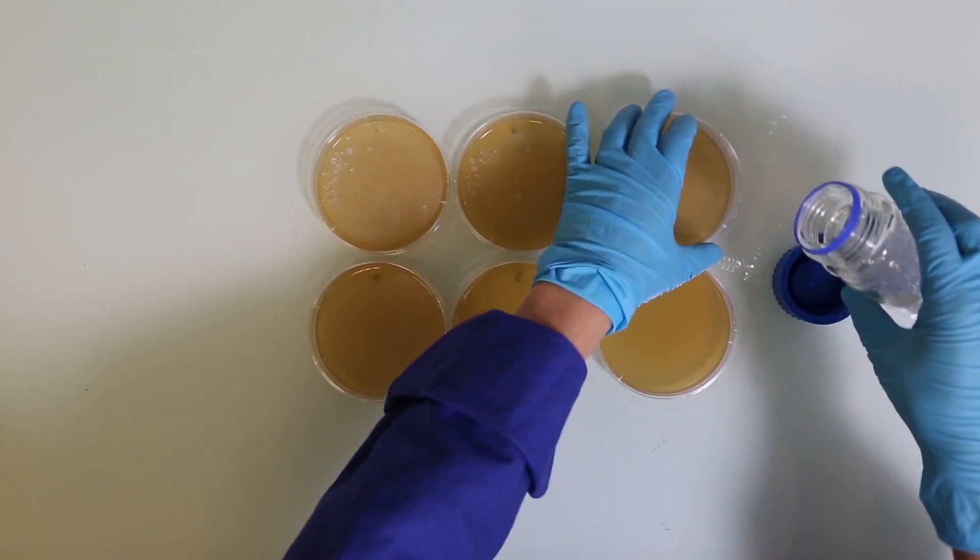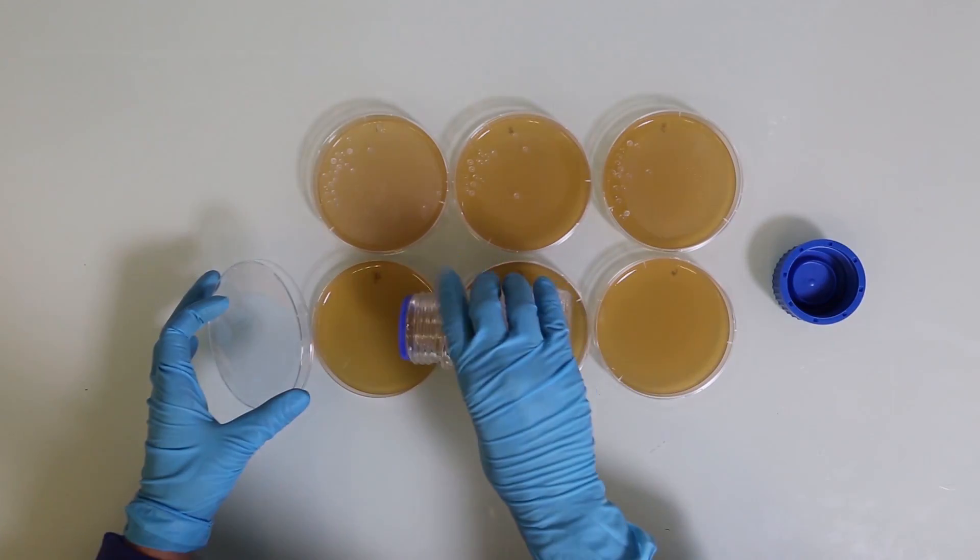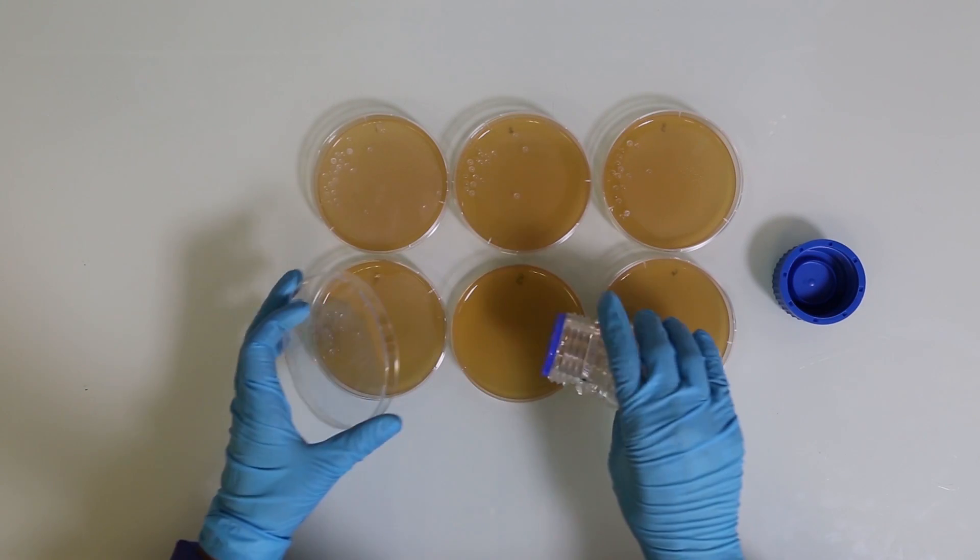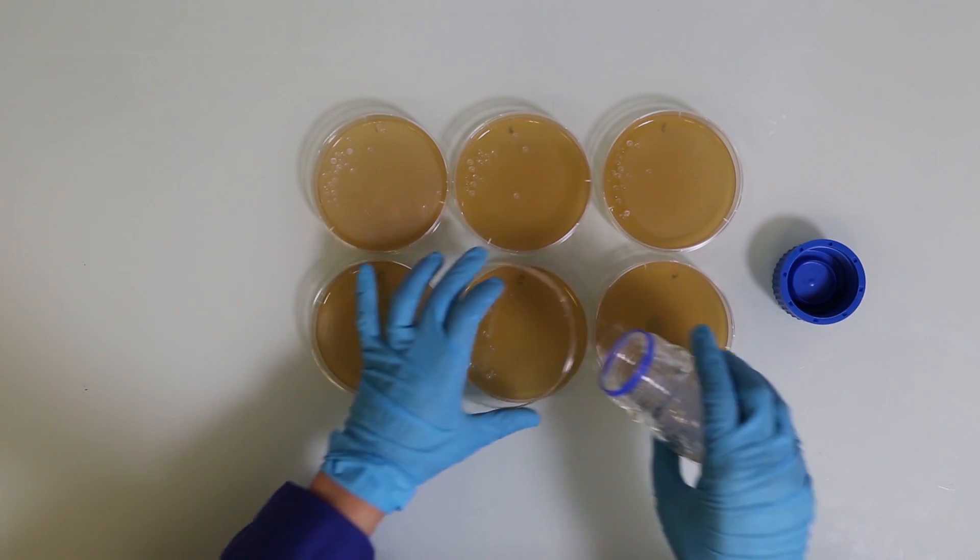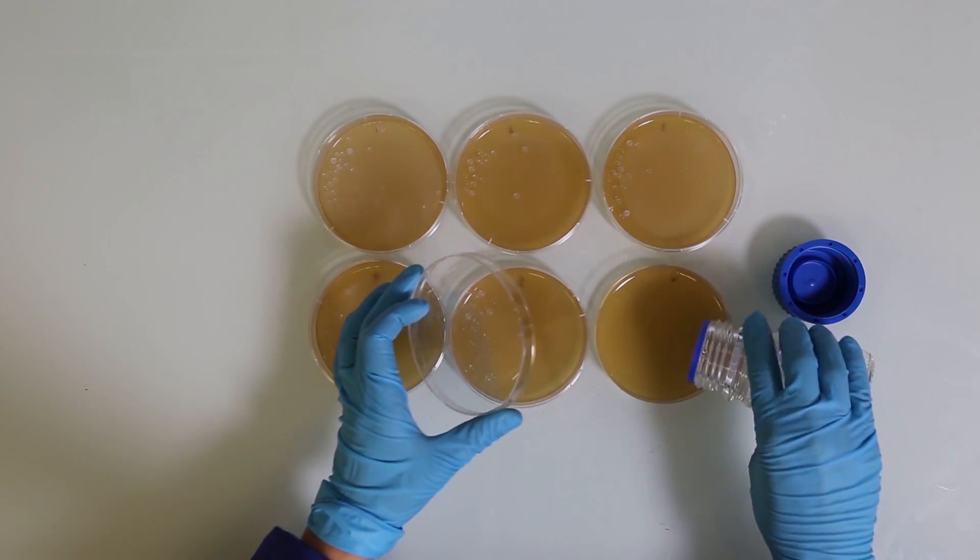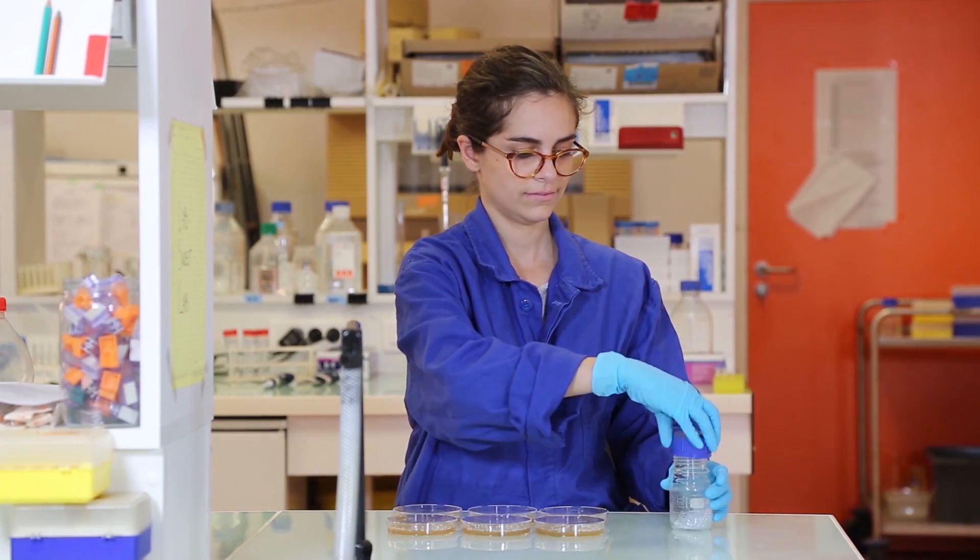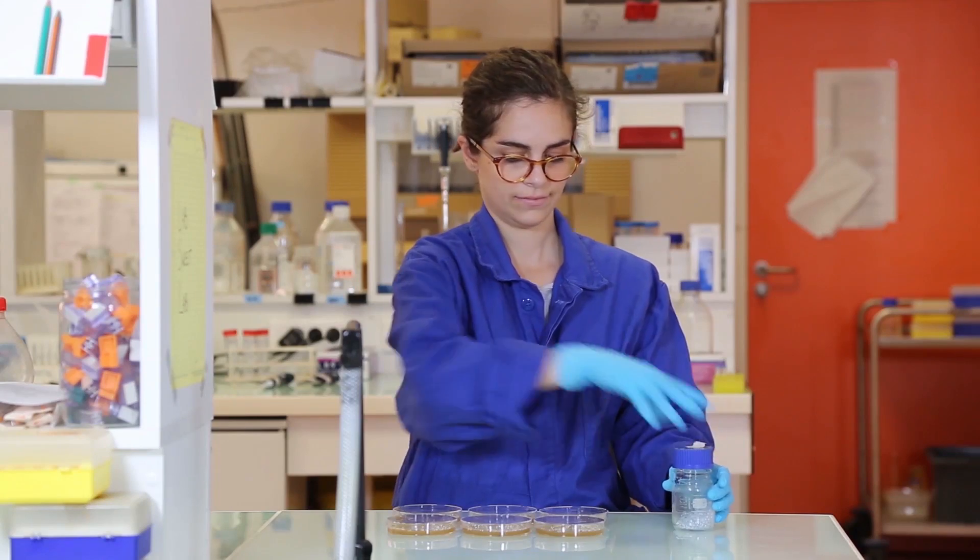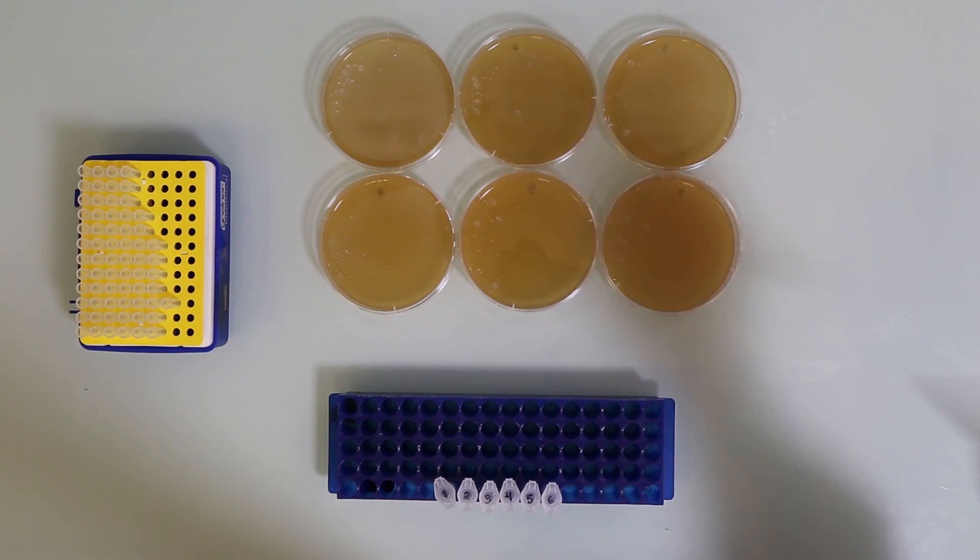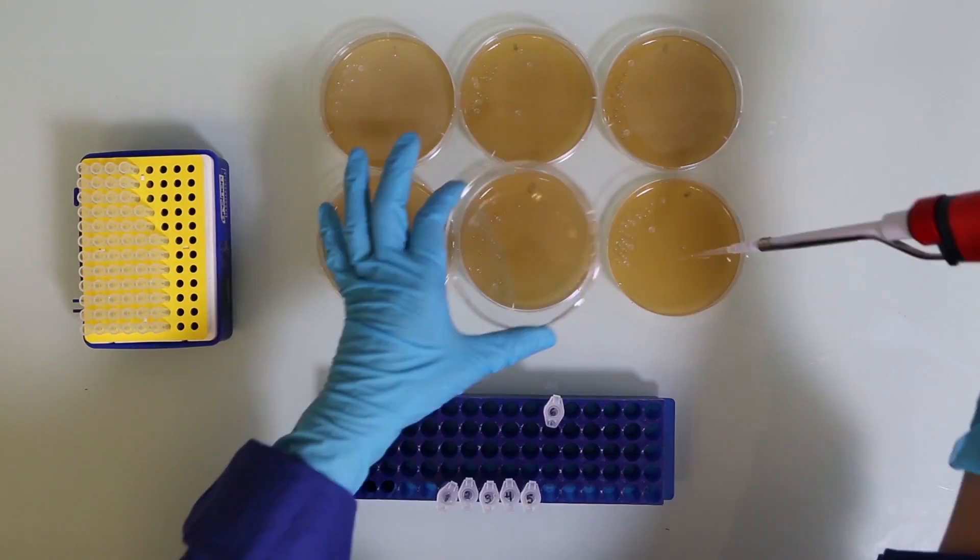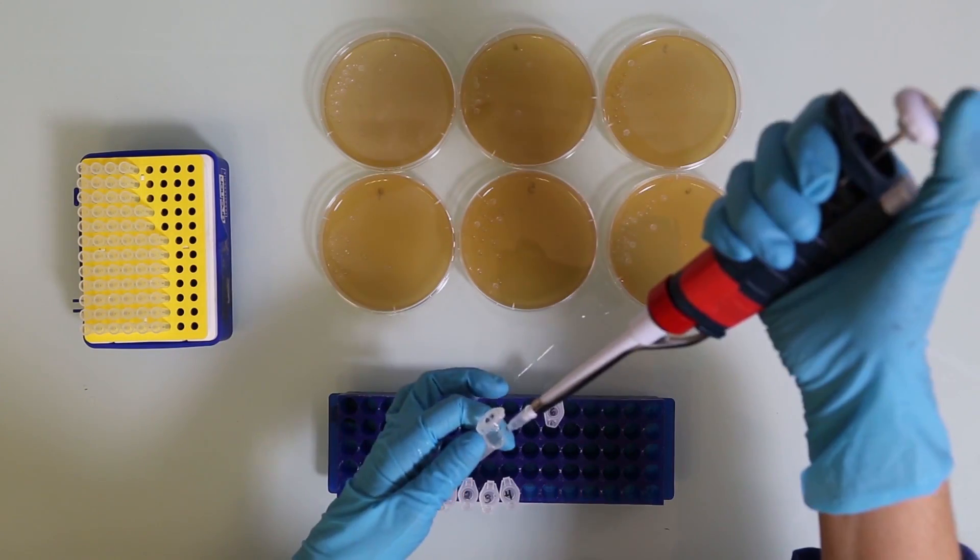Once we have our dilutions, we want to plate 100 microliters of each dilution onto our tomato-milk agar plates. Let's approximate that we have somewhere between 100,000 and 100 million CFUs per gram. Because we don't know for sure what our concentration is, we'll plate a range of dilutions so that we can make sure that at least one of our plates has an easily countable number of cells.